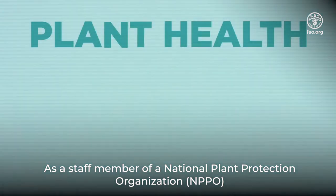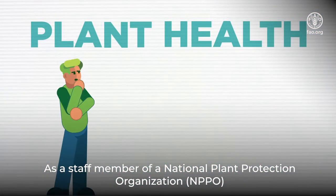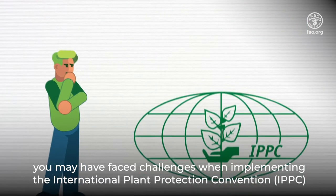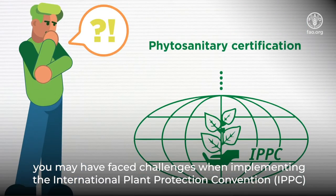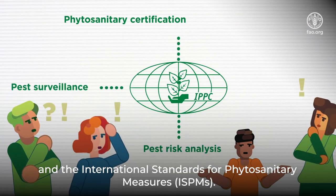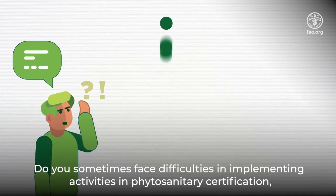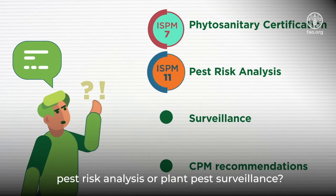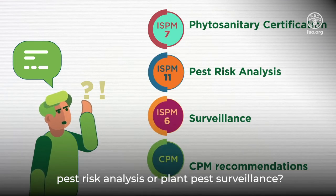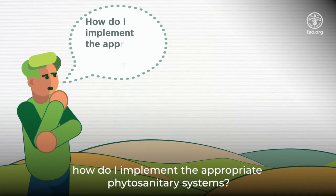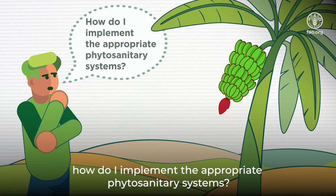As a staff member of a National Plant Protection Organisation, you may have faced challenges when implementing the International Plant Protection Convention and the International Standards for Phytosanitary Measures. Do you sometimes face difficulties in implementing activities in phytosanitary certification, pest risk analysis, or plant pest surveillance? You may have asked yourself: how do I implement the appropriate phytosanitary systems?